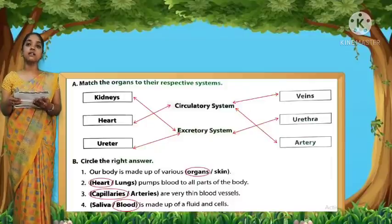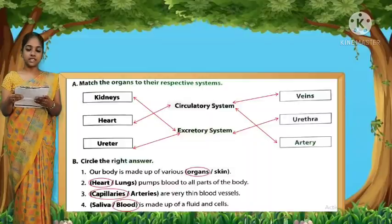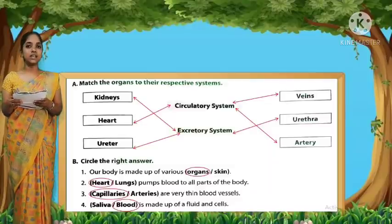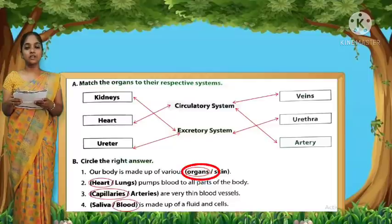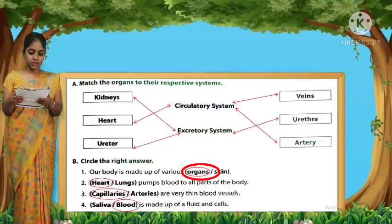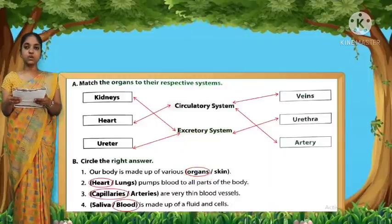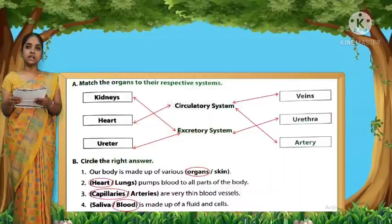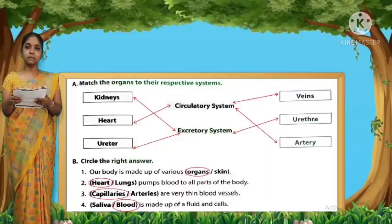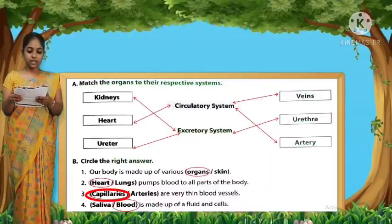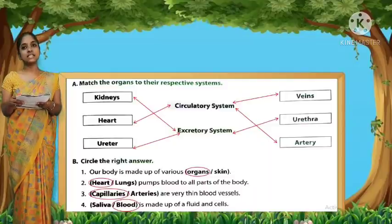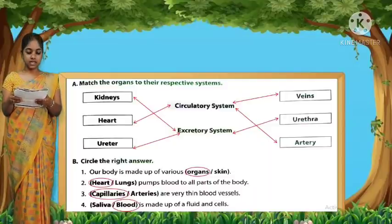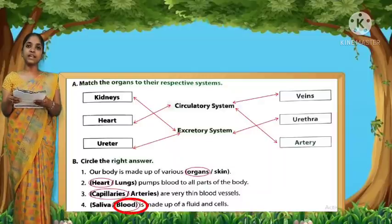Next, circle the right answer. First: our body is made up of various organs — circle organs. Second: the heart pumps blood to all parts of the body — the answer is heart. Third: capillaries are very thin blood vessels — circle capillaries. Fourth: blood is made up of fluid and cells — circle blood.